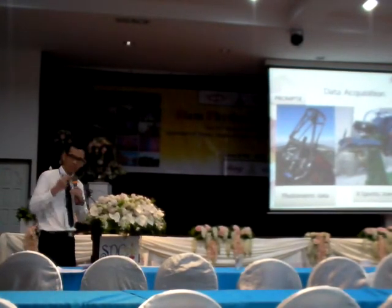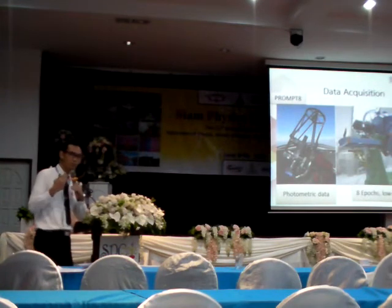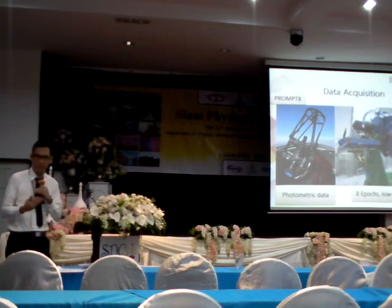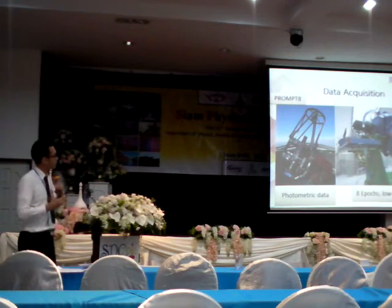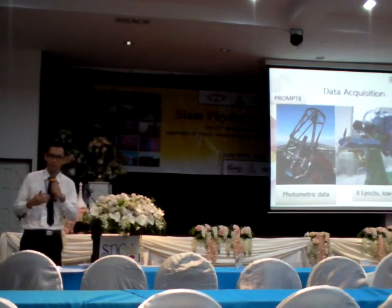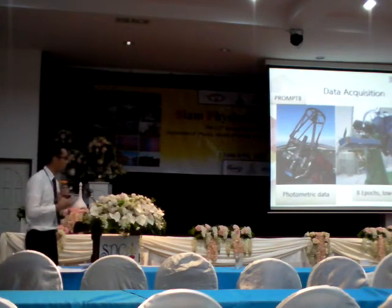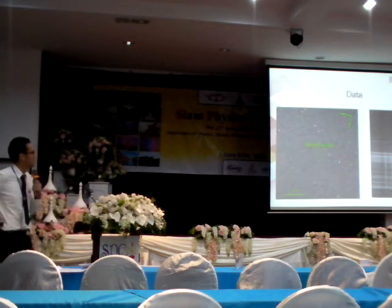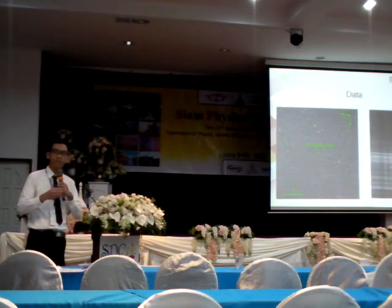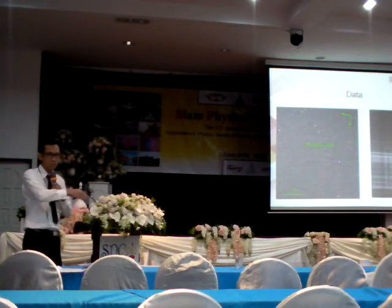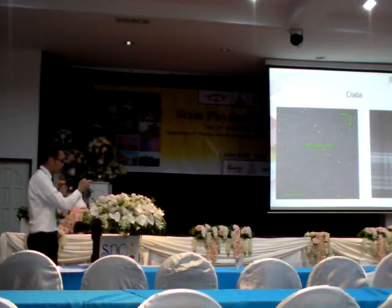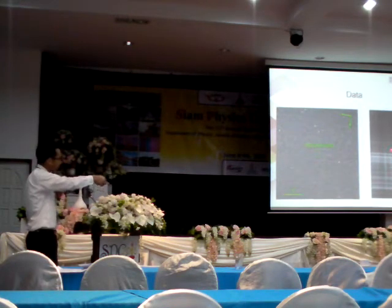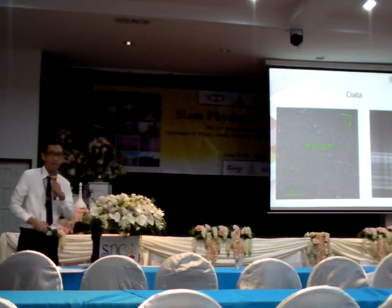Data acquisition was done using two telescopes. The first is PROMPT-8. This is used to obtain photometric data in B, V, R, and also narrowband oxygen-III. The second telescope is the Kanata 1.5 meter at Higashi-Hiroshima Observatory in Japan. From this telescope, we obtained eight epochs of low-resolution spectra. The data on the left side is the PROMPT-8 data; the FOV is approximately 0.3 degrees. On the right side is the spectra. This is where we put our quasar — you can see the dot here. That is actually the H-alpha emission line.